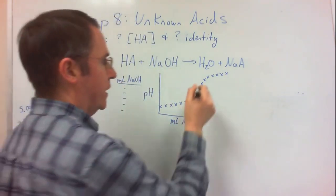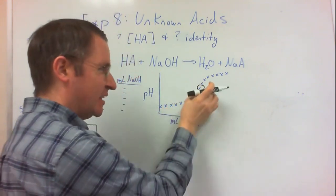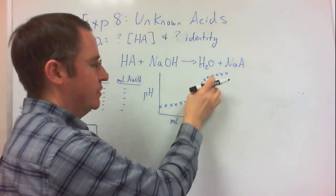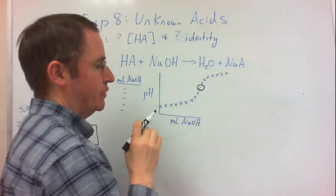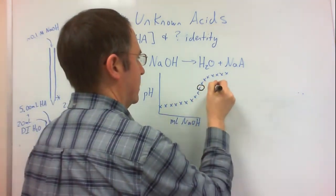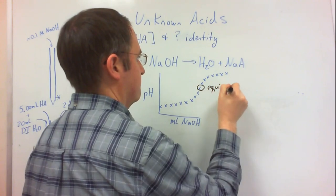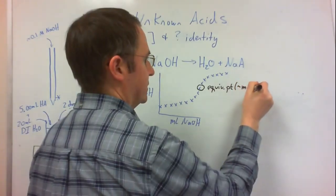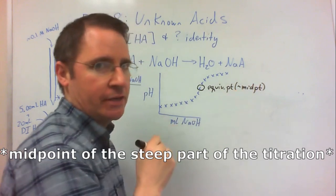And the equivalence point can be approximated as the midpoint of our titration curve, the midpoint of our steep portion of the titration curve specifically. So this is our equivalence point, which for our purposes we can estimate as the midpoint of the titration.